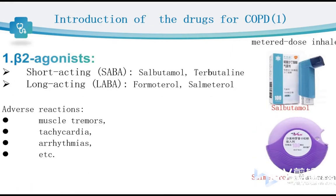Beta-2 agonists are one of the most popular bronchodilators. They can be divided into two subtypes. One is short-acting beta-2 agonists, or SABA — salbutamol is a typical SABA drug. Another subtype is long-acting beta-2 agonists, or LABA. For example, salmeterol in this inhaler device belongs to LABA.